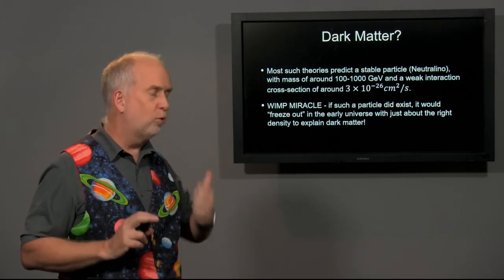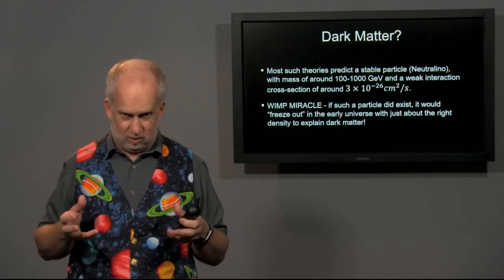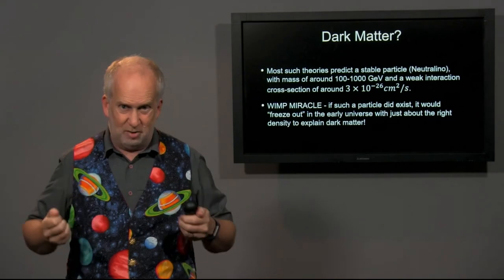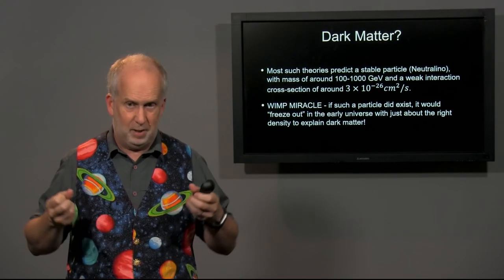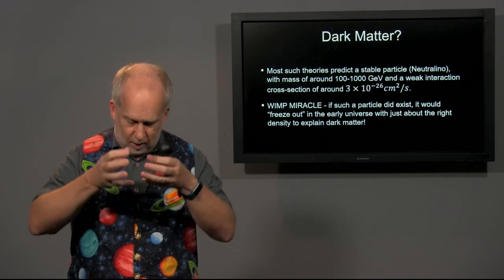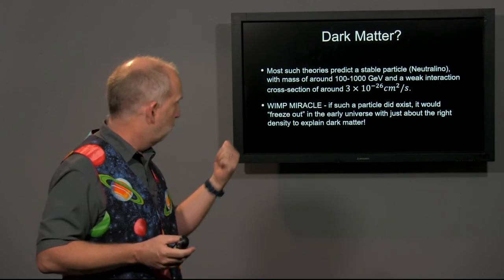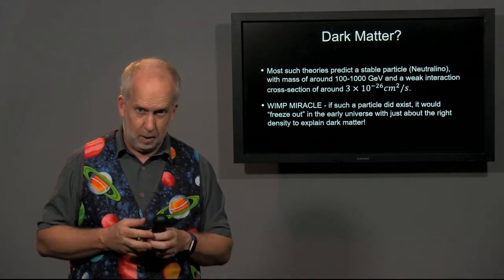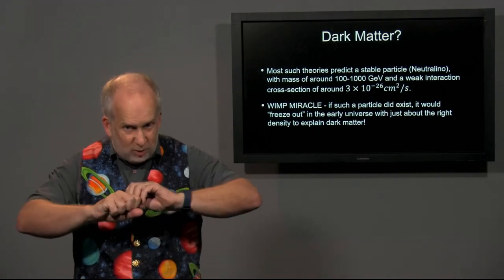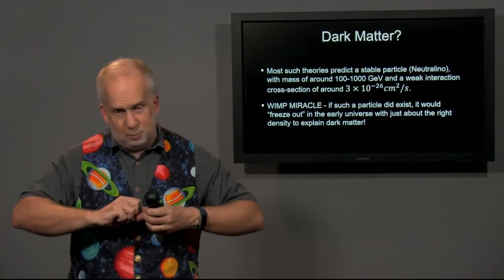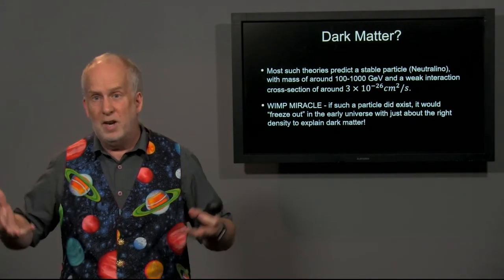Because if you have a particle with those properties, then in the very, very early universe, like tiny fractions of a second, everything would have been very energetic and very violent, and you're constantly getting particle-antiparticle pairs appearing and disappearing. But as the energy goes down, eventually the energy drops so low that you can no longer produce these dark matter particles. You'd think that the dark matter and anti-dark matter would then annihilate each other, but because space was expanding so fast, some of these particles just get carried apart and can never find their antiparticle, and so they never disappear.